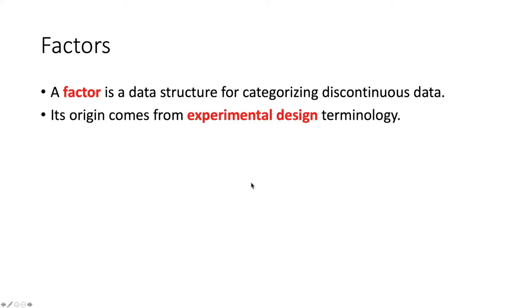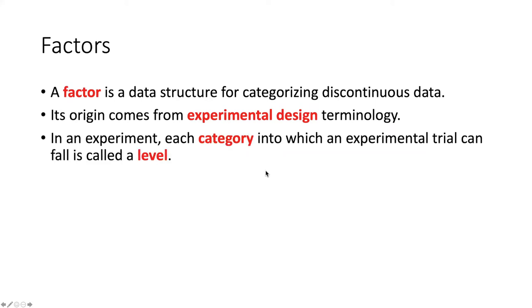The term factor has its origin in the terminology of experimental design. In experimental design, when we are talking about an experiment, we have categories into which an experimental trial can be divided. These categories correspond to factors in R. Each of the categories that is included within a factor is known as a level. So the origin of this would be something like the level of a dosage of a drug, but it's broader than just a level in that sense. It simply means a different kind of category.